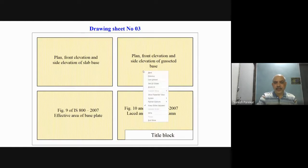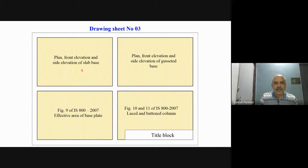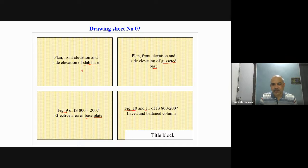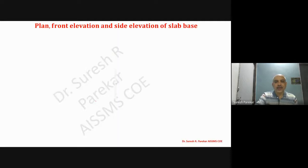Good evening, today we are going to see the third sheet. In this, we are going to divide the sheet into four parts. The first part covers plan, front elevation, and side elevation of slab base, then plan, front elevation, and side elevation of gusseted base. This is unit number three. We also have figures for effective area of base plate, and figure 10 for laced columns and figure 11 for batten columns — both related to steel structures studied in unit three.